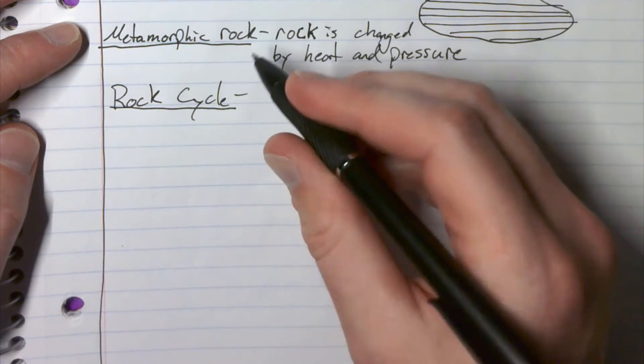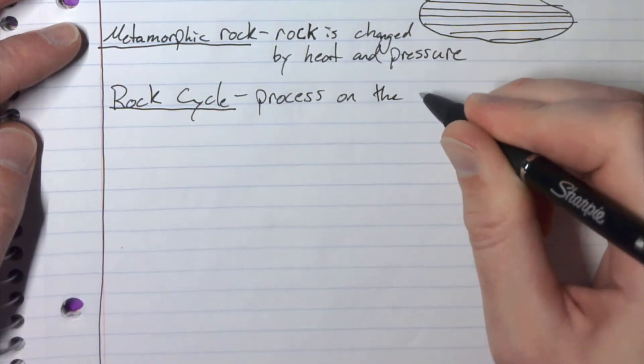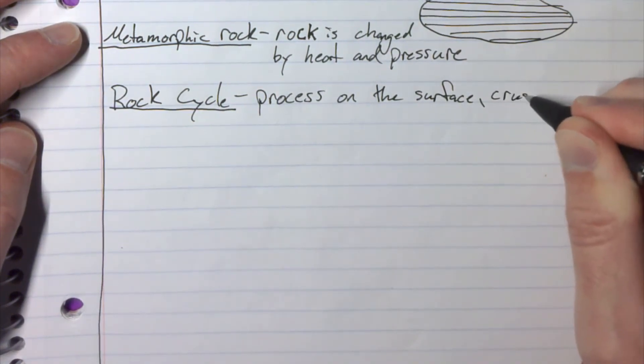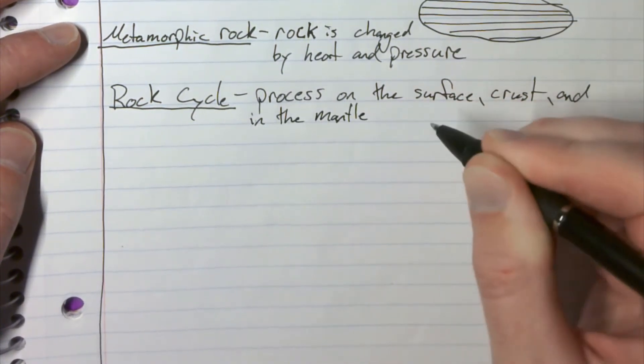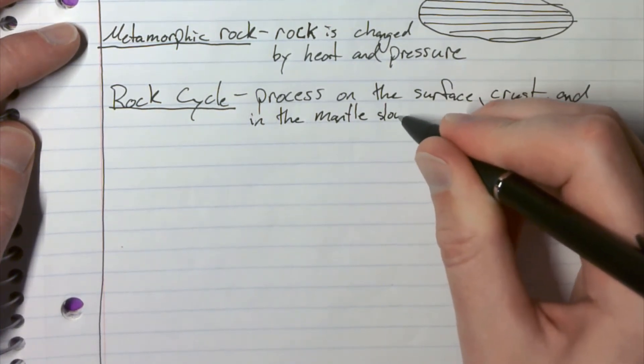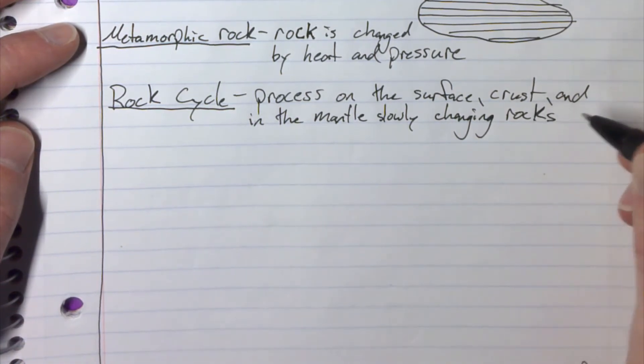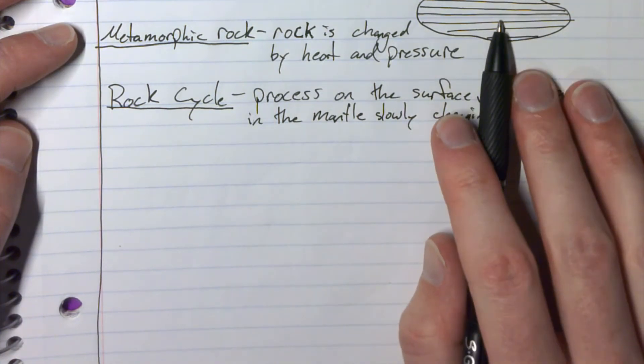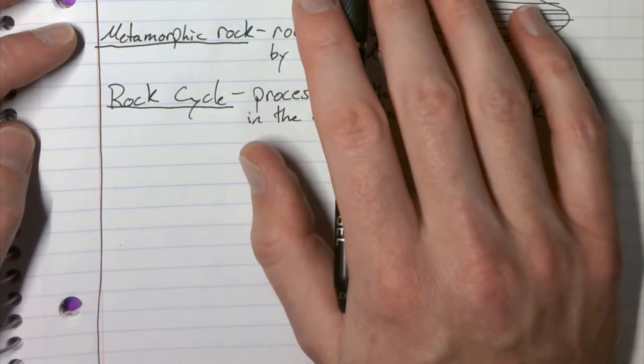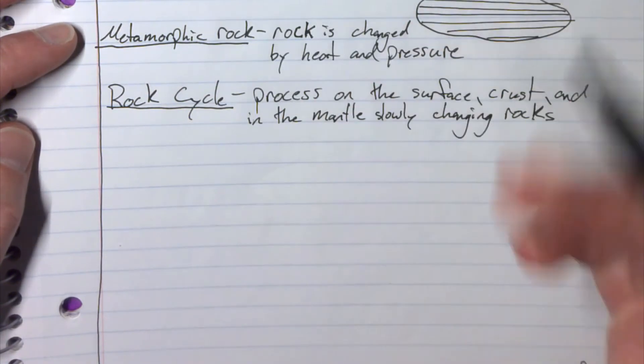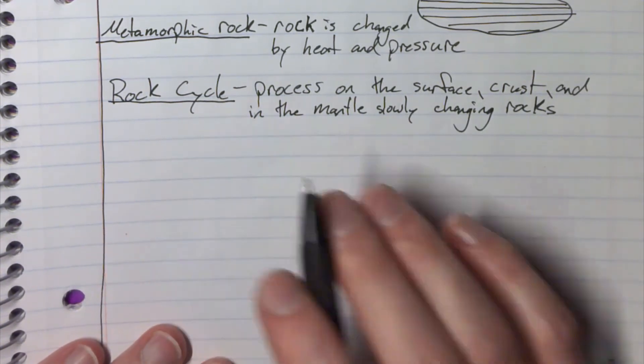And this whole thing is a process, this rock cycle. So let's put process on the surface, on the surface and the crust and in the mantle, slowly changing rocks. So it might be sedimentary rock at one point, but then it goes into maybe some heat and pressure and becomes now a metamorphic rock. And then it heats up even more and it turns into some magma, and then it comes out as lava. So it's like a process that keeps going and going.